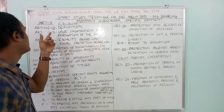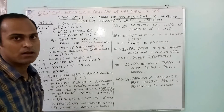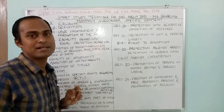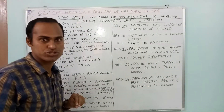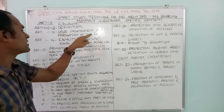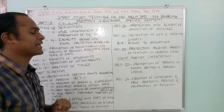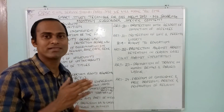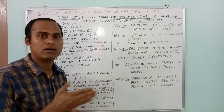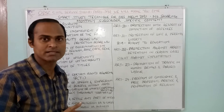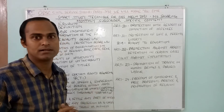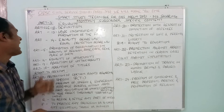Article 12 is the definition article. The fundamental rights are mentioned in Part 3 of the Indian Constitution. Article 13 deals with laws inconsistent with or in derogation of fundamental rights. Whatever laws are inconsistent with fundamental rights, the Supreme Court under Article 32 and the state High Court under Article 226 will declare them null and void — meaning non-existent.